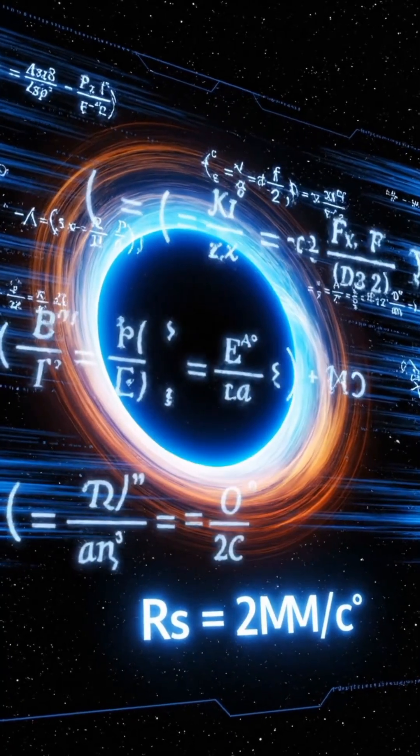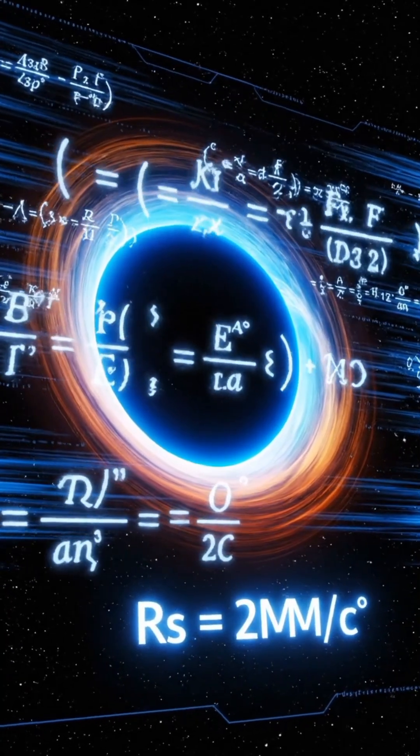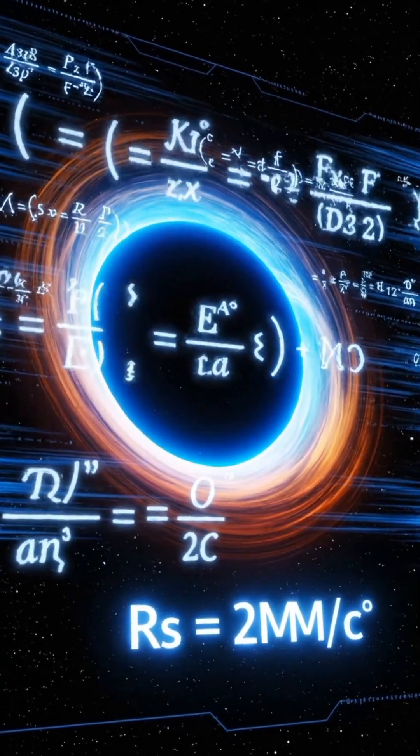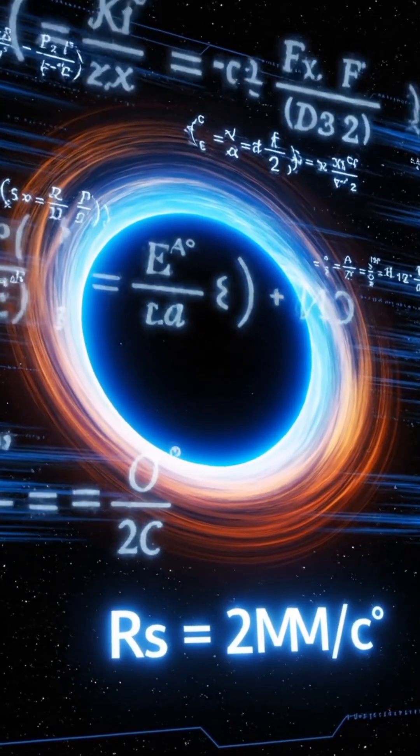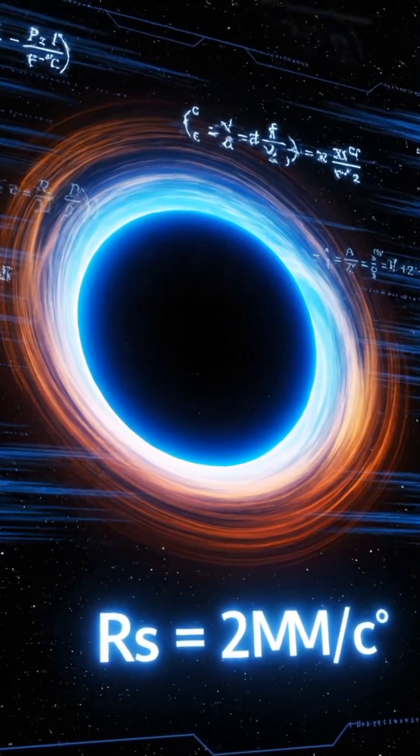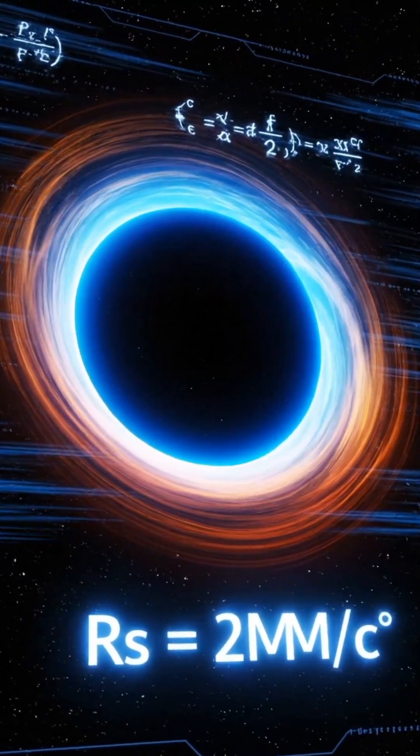The Schwarzschild radius defines the size of the event horizon for a non-rotating black hole, a key factor in its mechanics.